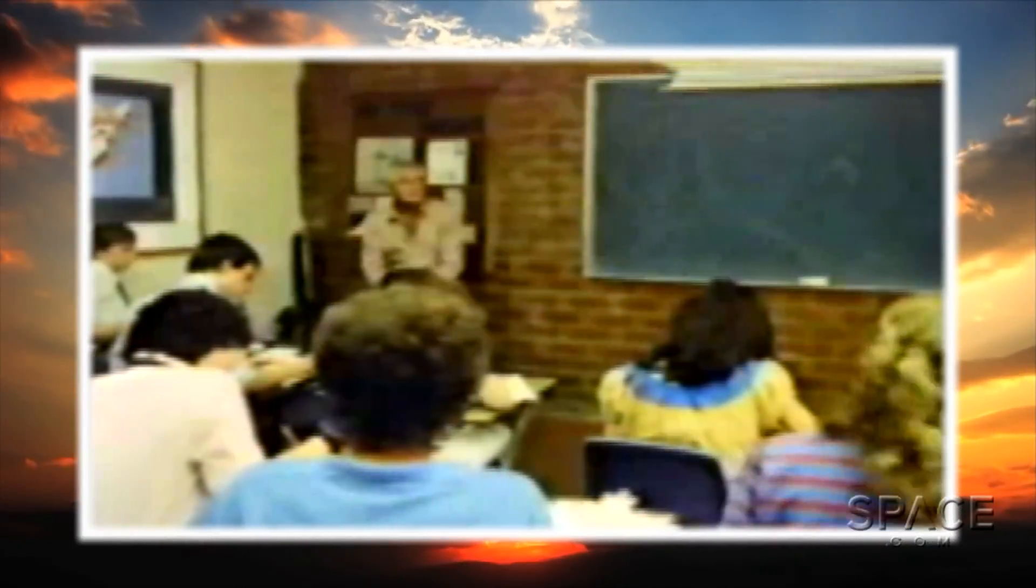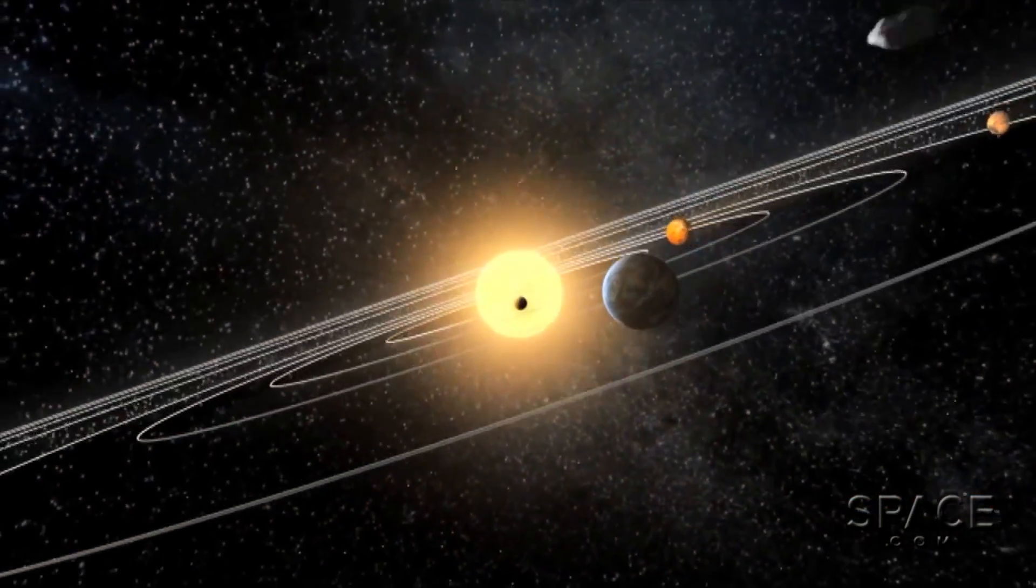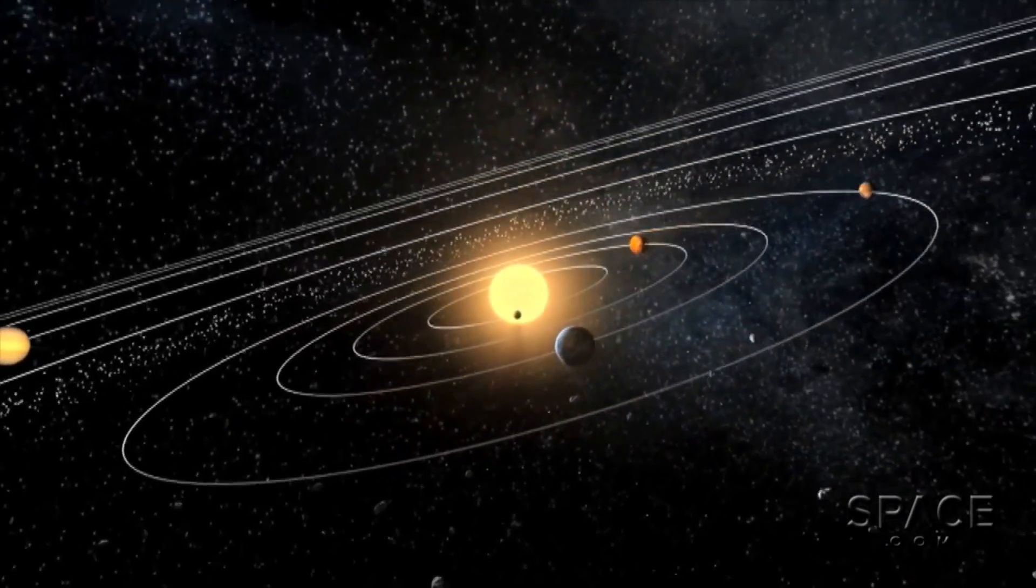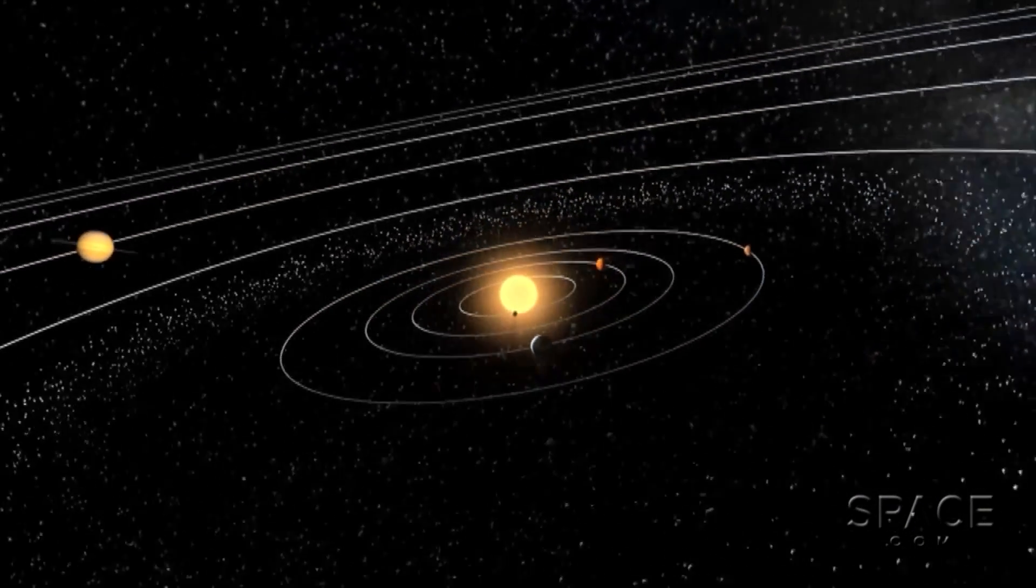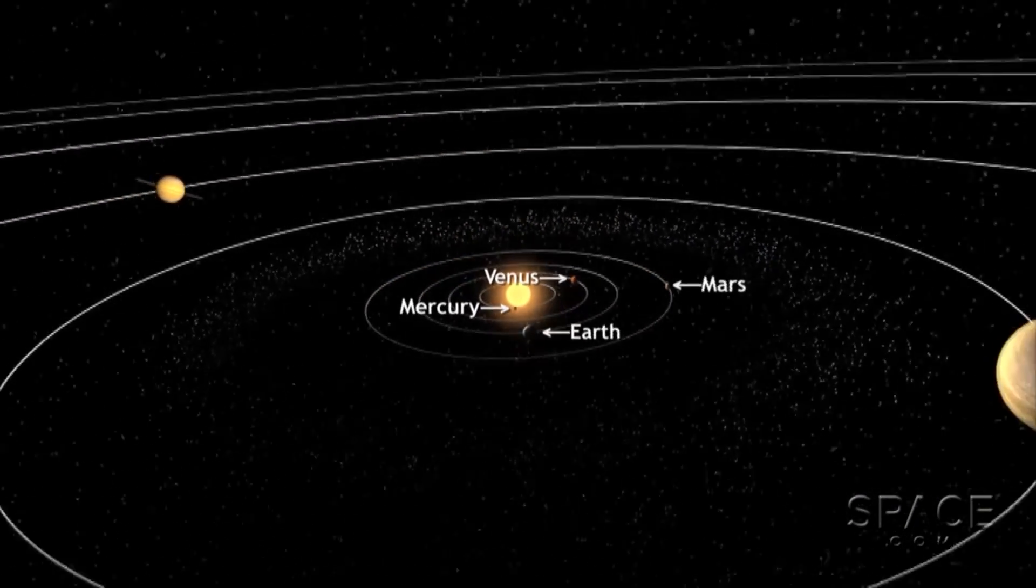If you attended elementary school before 1995, you probably learned that our solar system has two main parts. The inner solar system consisting of the rocky planets Mercury, Venus, Earth, and Mars,